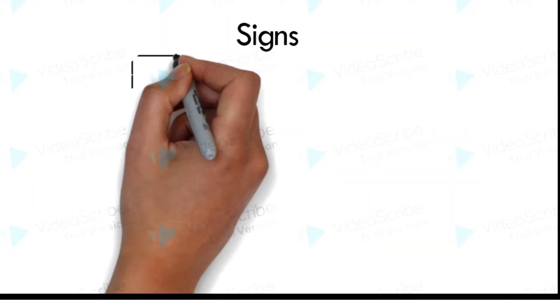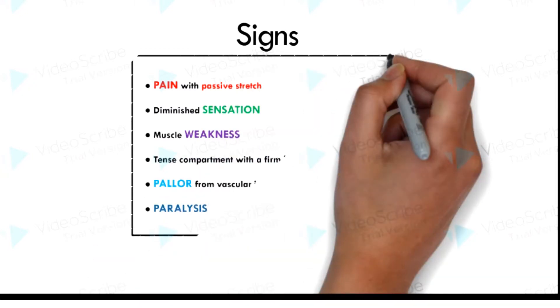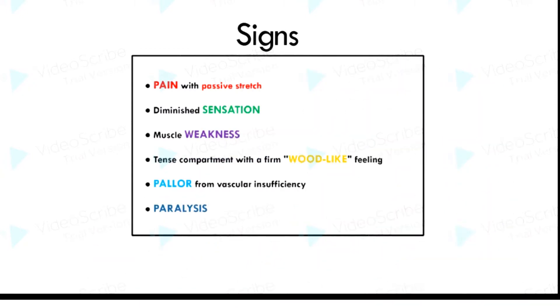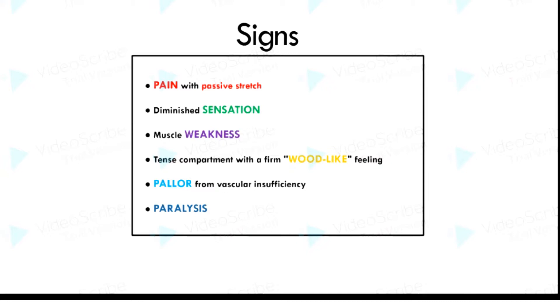When examining a patient with suspected compartment syndrome, these are some of the signs which can be elicited: pain with passive stretch of muscles in the affected compartment is an early finding. This can be elicited by stretching the big toe. Diminished sensation, muscle weakness, tense compartment with a firm wood-like feeling, pallor from vascular insufficiency, and paralysis.